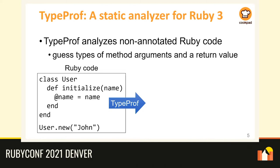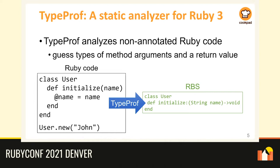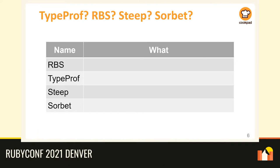TypeProf is a static type analyzer for Ruby. The basic feature of TypeProf is type inference of Ruby code. For example, consider this Ruby code — it defines a User class which has an initialize method and creates its instance. This code is very plain, with no type annotation, just as you usually write. When you feed this code to TypeProf, it guesses method signatures and outputs them in RBS format. The generated signature says there is a class definition called User, and it has a method called initialize which accepts a string instance as an argument. If you're interested, please see my previous talk at RubyConf 2019.